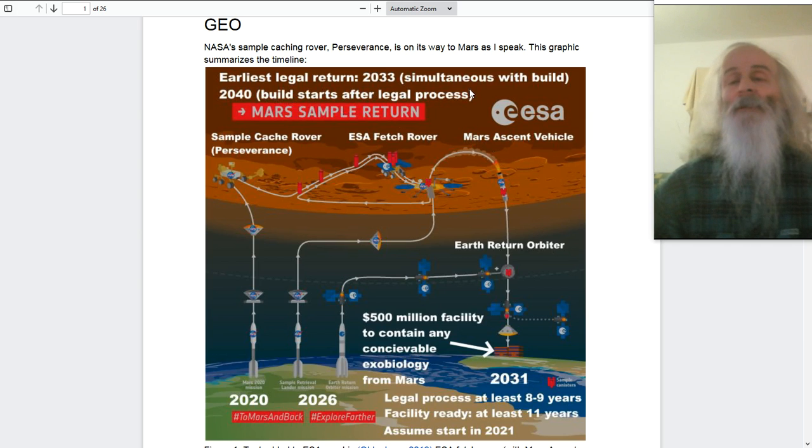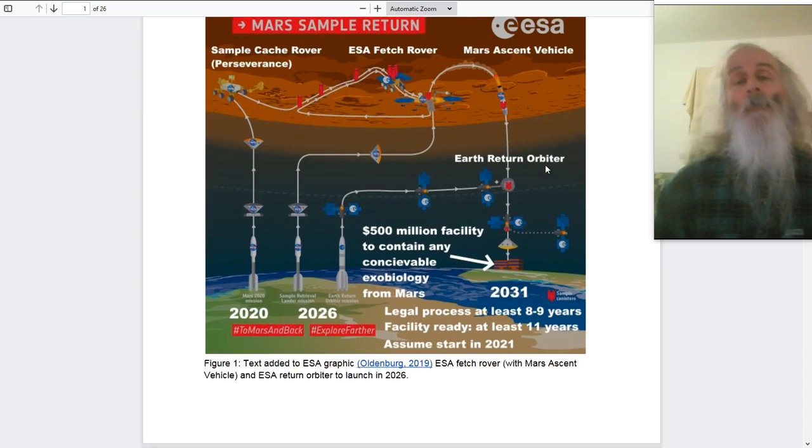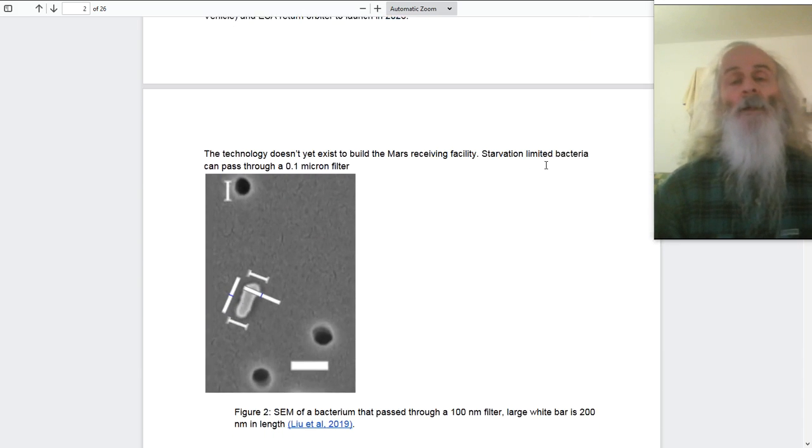So these would seem to be required that the build starts after the legal process. And then if that is correct, 2040 is the earliest actually. Given the possibly delays in the legal process, the need to develop the technology first before you can even start the legal process, 2050 is a more likely time.